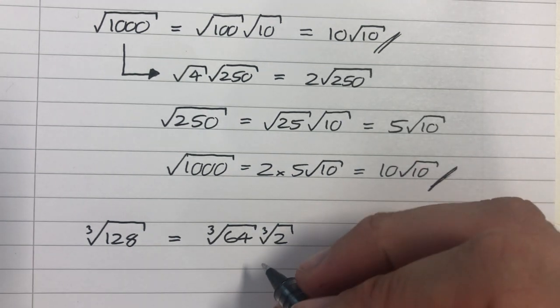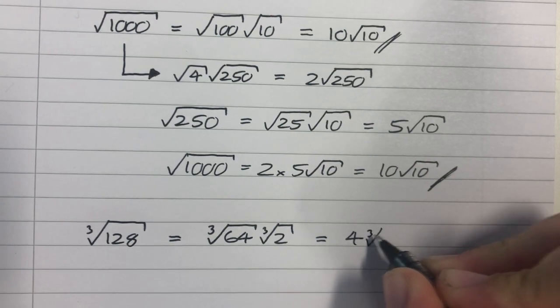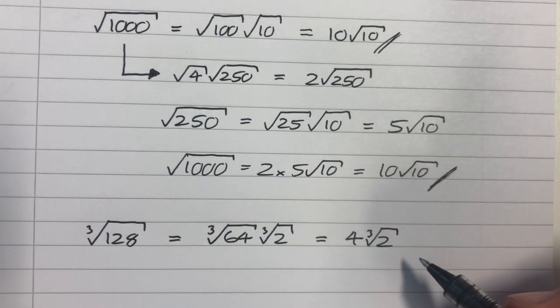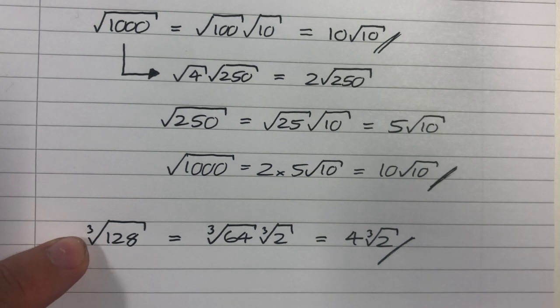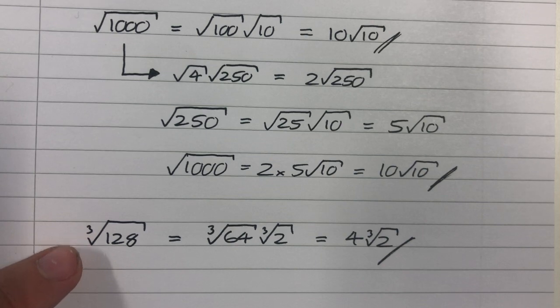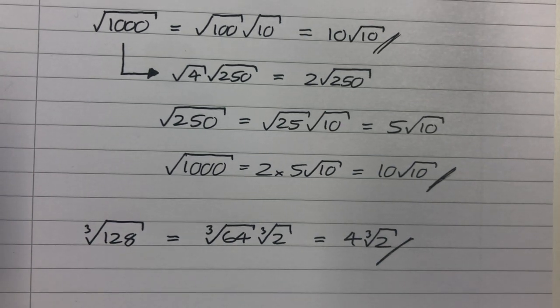When we cube root it, we'll get 4. This is equal to 4 times the cube root of 2. And that is how we would simplify the cube root of 128. And indeed, you can take this theory further. For the nth root, we are looking for the largest nth power that goes into the content of the surd. And that will help us to simplify our answers.